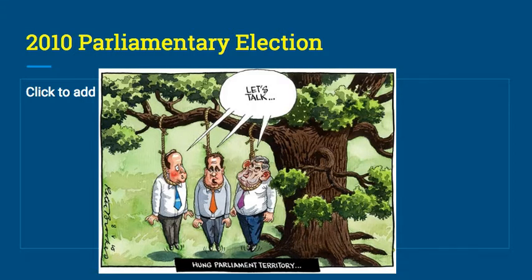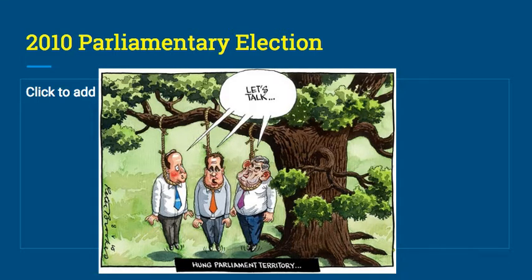An important piece of key history dealing with Parliament and parties is the 2010 parliamentary elections, which appear in many AP questions. In 2010, the election resulted in a hung parliament — where no party obtains a majority of seats. Prime Minister David Cameron formed a coalition government between the Conservatives and the center-left Liberal Democrats, calling for fairness, freedom, and responsibility, seen as a nod to both Thatcher and Blair.